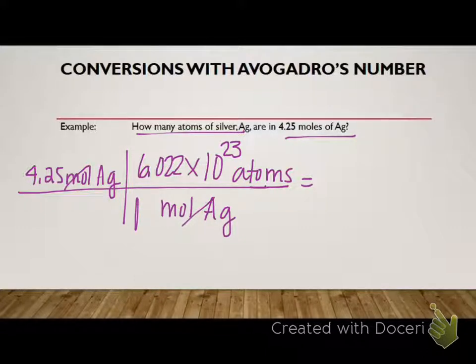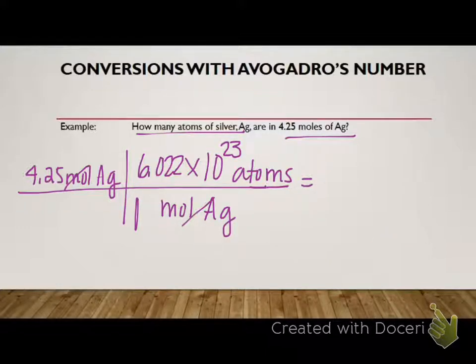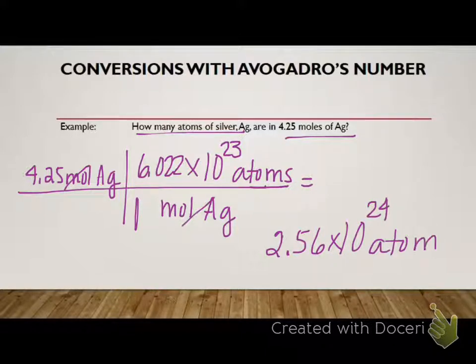And so we would multiply 4.25 times 6.022 times 10 to the 23rd. And when we do that, we should get 2.56 times 10 to the 24 atoms of silver.